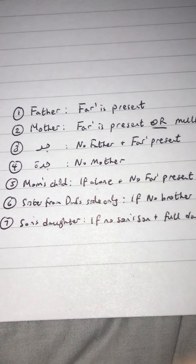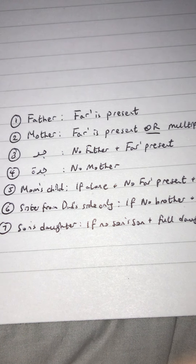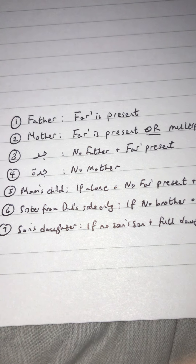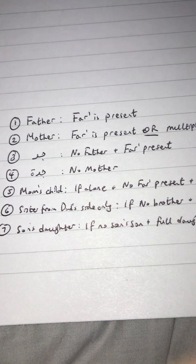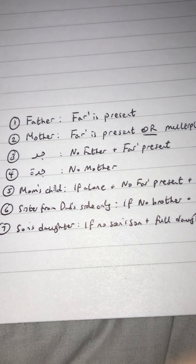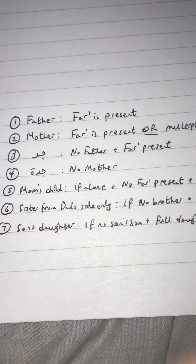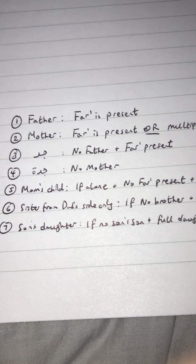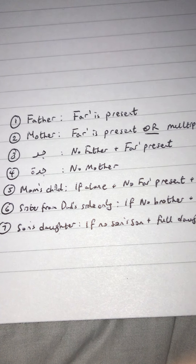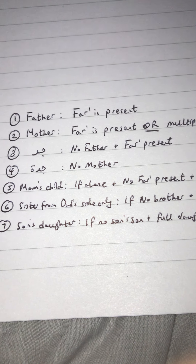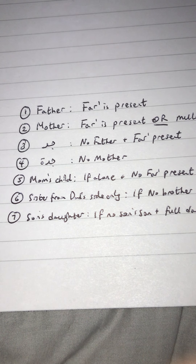The fourth person is the jaddah — the grandmother. The grandmother inherits a sixth on the condition that there is no mother present. We are looking at this from the angle of the closest grandmothers to the deceased. For example, if a person dies and leaves behind a great-grandmother and a grandmother, the grandmother inherits and the great-grandmother is blocked by her, as she is closer to the deceased. Generally speaking, the grandmother — both maternal and paternal — will inherit a sixth if there is no mother present.